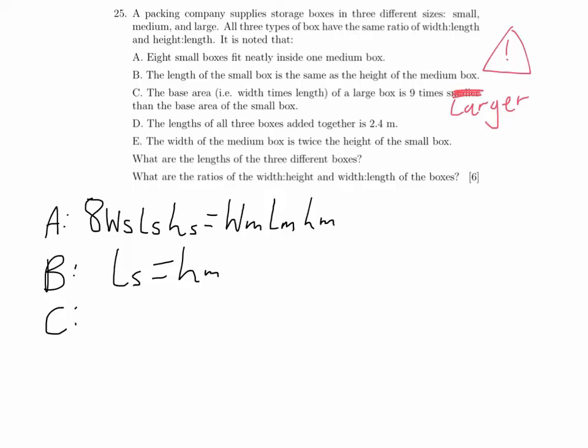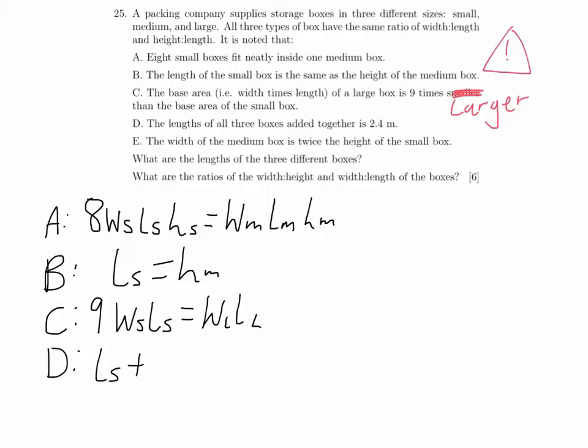We're also told that the length of the small box is the same as the height of the medium box. We're told that the base area — the width times the length — of the large box is nine times that of the base area of the small box, so nine small box areas fit into one large box area. We're also told that the lengths of all three boxes add up to 2.4 metres.